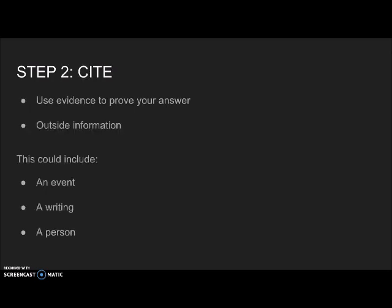Secondly, you should cite outside information, and this information will help prove your answer. This could be an event that occurred, a writing, a person, or something that a person said. It's really just anything outside of what you are given.